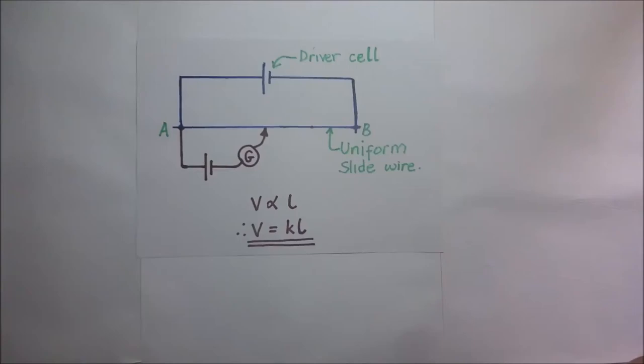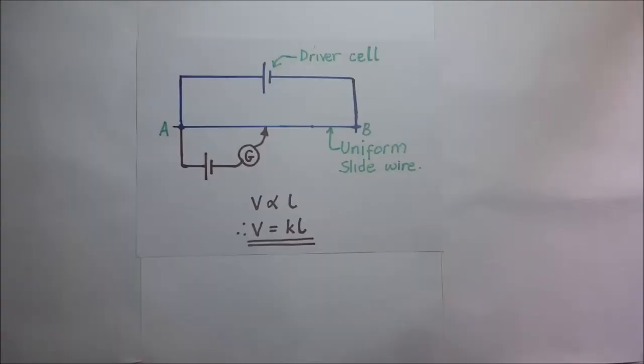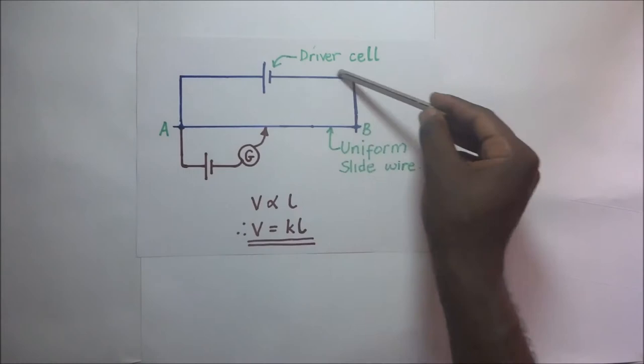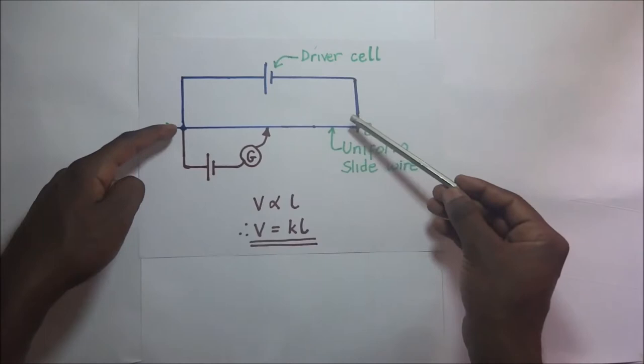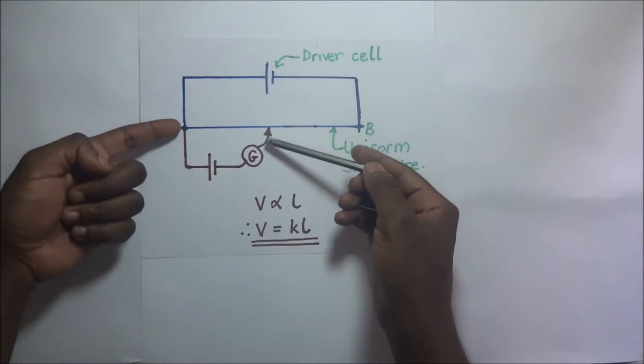The principle of a slide wire potentiometer. This is a potentiometer circuit diagram. It definitely has a driver cell. This driver cell is connected to a circuit we are calling the primary circuit, and of course the primary circuit has got this slide wire connected to it. Below here is what we are calling the secondary circuit, and of course this primary circuit is connected to the secondary circuit, which is always down here.